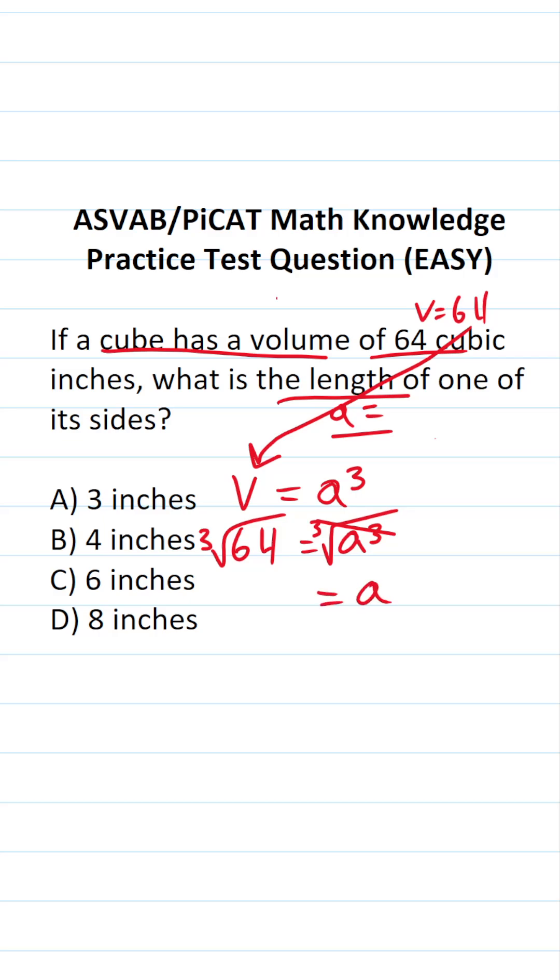leaving you with A over here. Now we have to figure out what the cube root of 64 is. We're looking for a number that when multiplied by itself three times gives you 64. Well, what about 4 times 4 times 4? 4 times 4 is 16. 16 times 4 is 64.